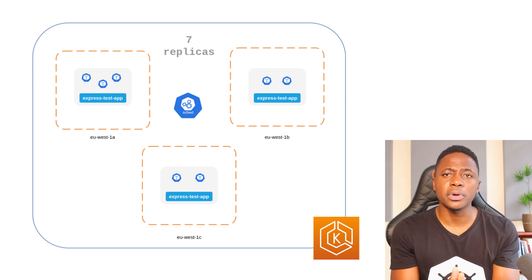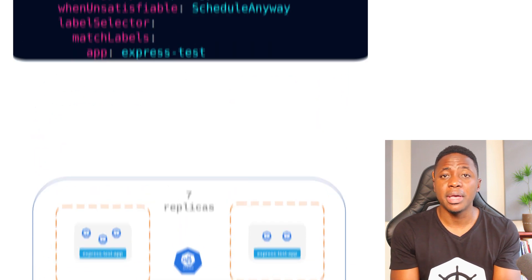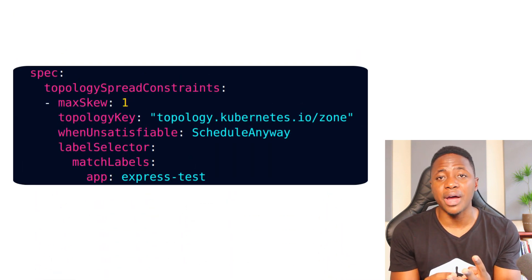There are a few important properties that you should be aware of when using this particular approach: Max Skew, Topology Key, When Unsatisfiable, and the Label Selector.